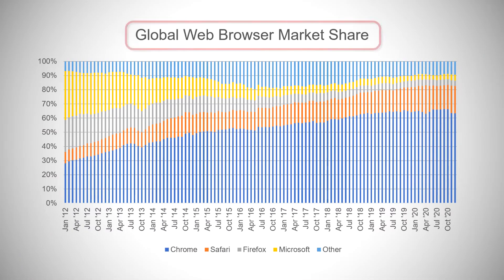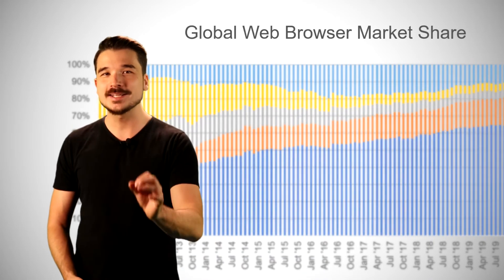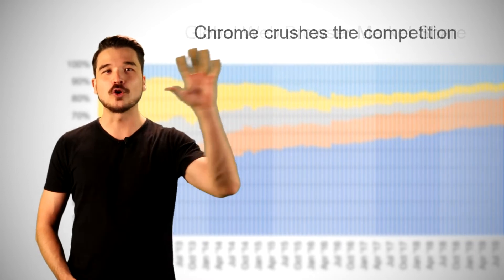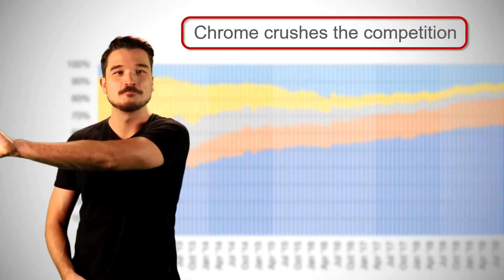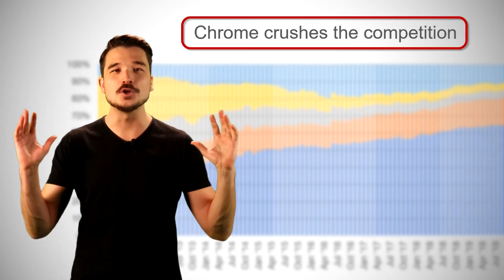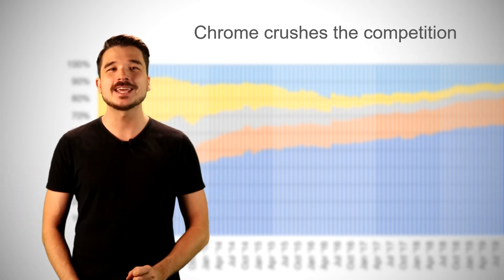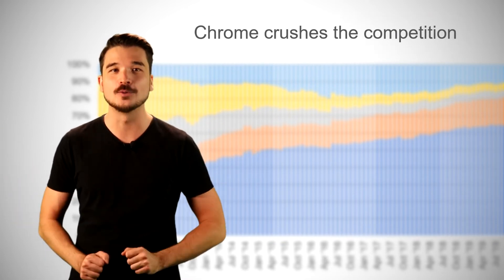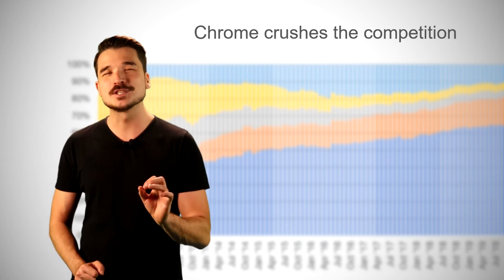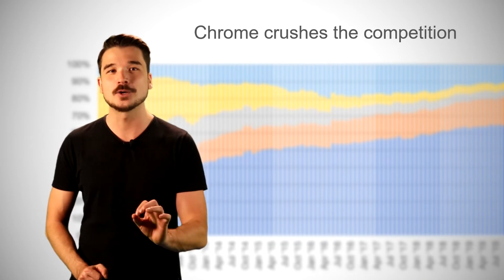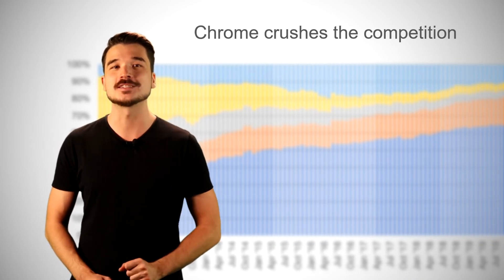Let's get rid of our boring title, "Global Web Browser Market Share." This title merely tells our audience what's in the chart, but not why they should care about it. We'll replace it with "Google Chrome Crushes the Competition." This title is like a newspaper headline — it captures the key insight using just four words, and even uses alliteration and dramatic language to capture the audience's attention.